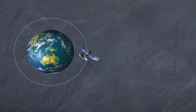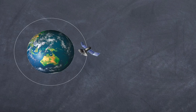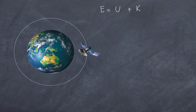Now we're in a position to discuss gravitational potential energy, kinetic energy, and the combined total energy of a satellite. For a satellite in orbit around the Earth, the total energy equals the sum of the gravitational potential energy plus the kinetic energy. It has gravitational potential energy from its position, and kinetic energy from its velocity around the Earth.